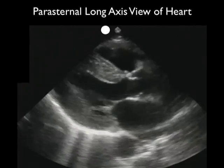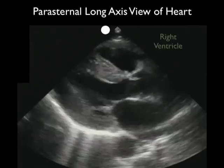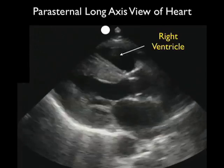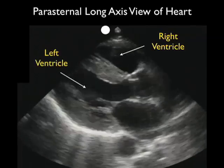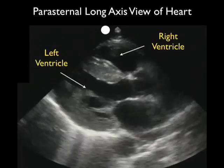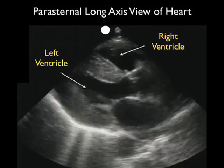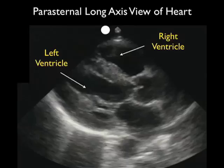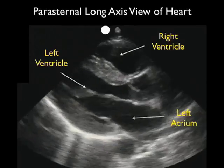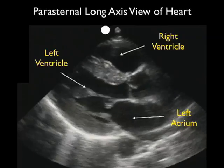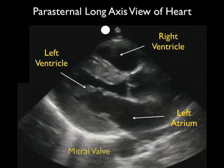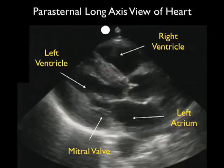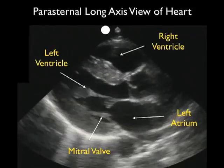Now let's take a look at the parasternal long axis view of the heart in action. The most superficial chamber is the right ventricle, and normal dimensions are that it should be about half the size of the left ventricle — if they are the same size, that could be a sign of RV strain. Posterior to the right ventricle is the left ventricle with its hypertrophic walls; this patient had long-standing hypertension. Looking at the percentage change from diastole through systole, the walls come in well with each heartbeat, indicating good contractility. We see the left atrium to the right of the left ventricle, with the mitral valve flipping up and down between them, indicating good blood flow.